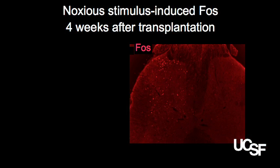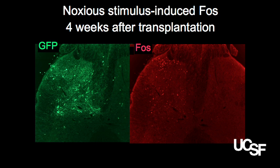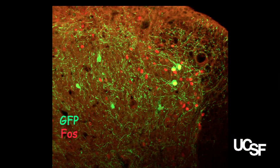Next, we asked whether this integration is actually functional. To address this question, we administered peripherally a noxious chemical agent to activate neurons in the spinal cord. You can see here the pattern of expression of FOS, which is an immediate early gene and a marker of neuronal activation. The question was: is this peripheral stimulation able to induce FOS in the MGE transplanted cells? The answer is yes — we determined that up to 35% of the MGE cells actually express FOS, shown here in yellow in this picture.